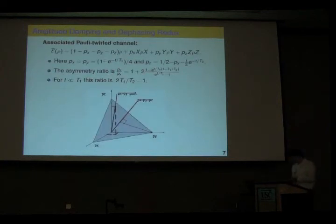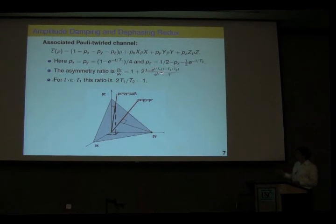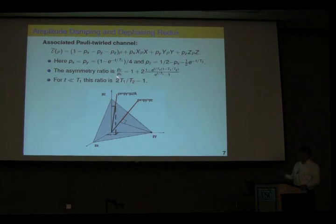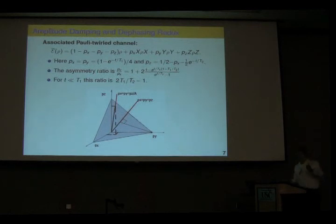We can apply this to the combined amplitude damping and dephasing channel. The resulting twirled Pauli channel has X, Y, Z error probabilities we can work out. In particular, the ratio of the probability for a Z error over the probability for an X error is roughly two times the ratio T1/T2 in the regime where time is much smaller than T1. So this asymmetry in T1 and T2 roughly translates into the same ratio of Z error probability over X error probability — very reassuring.